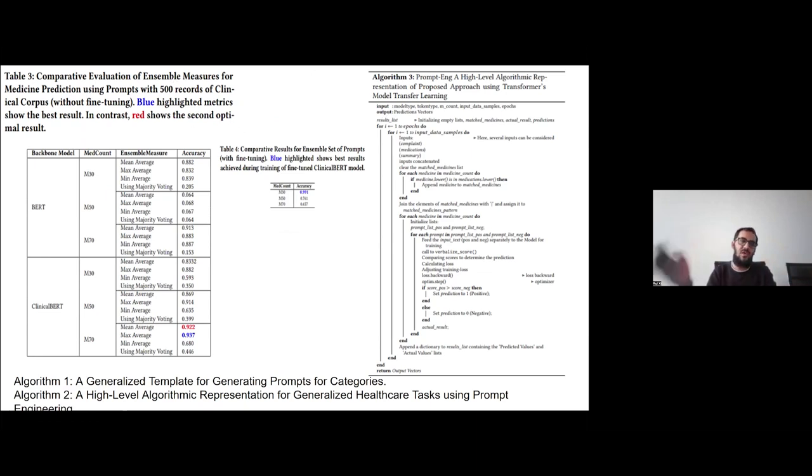Here, although we have lots of data, but due to the computational resources, we cannot process all the data. And eventually on the only 500 reports of data, we observe that we achieve such a higher performance. And then we have the medicine count, like the medicine 30, medicine 50. So we can predict a count of medicine, like 30 group of medicine, 50 group of medicine, 70 group of medicine. And then we measure the ensemble measures using the mean average, max, min, and using majority voting and so on. The accuracy is given. The blue highlights the best result in contrast. Red shows the optimal, second optimal result.